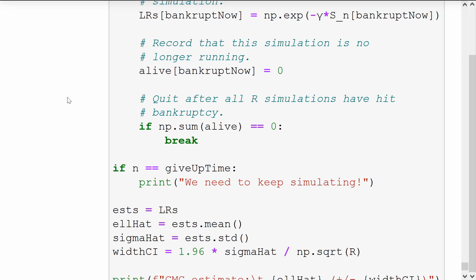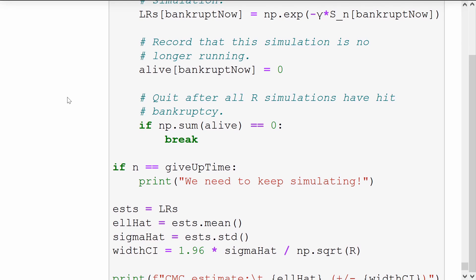If everything goes well, we expect that none will be alive by the time the loop ends. And just in case I gave up too early and some simulations needed a few more claims to go bankrupt, I have this small check here and a print statement. The estimates are now simply the likelihood ratios, and the mean and confidence interval calculations are the same as before.